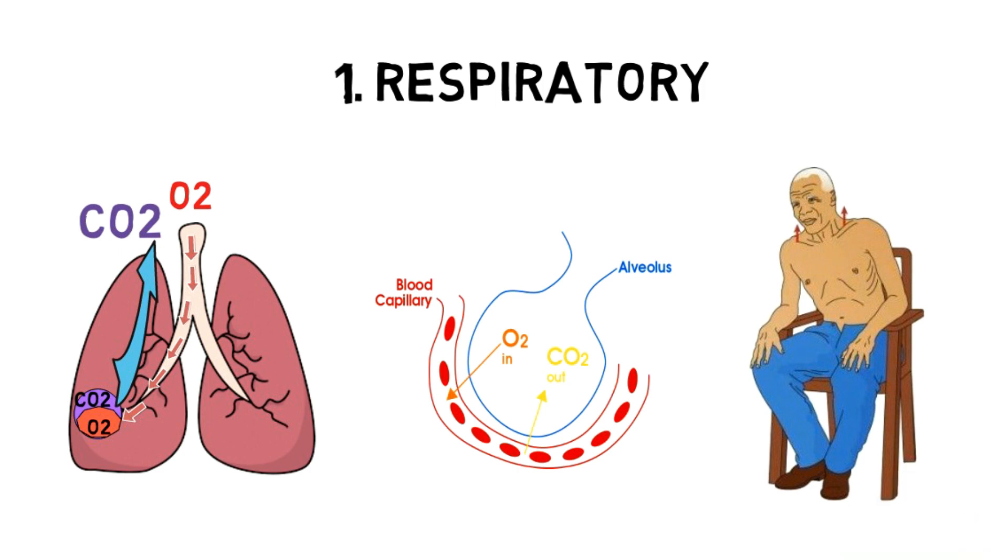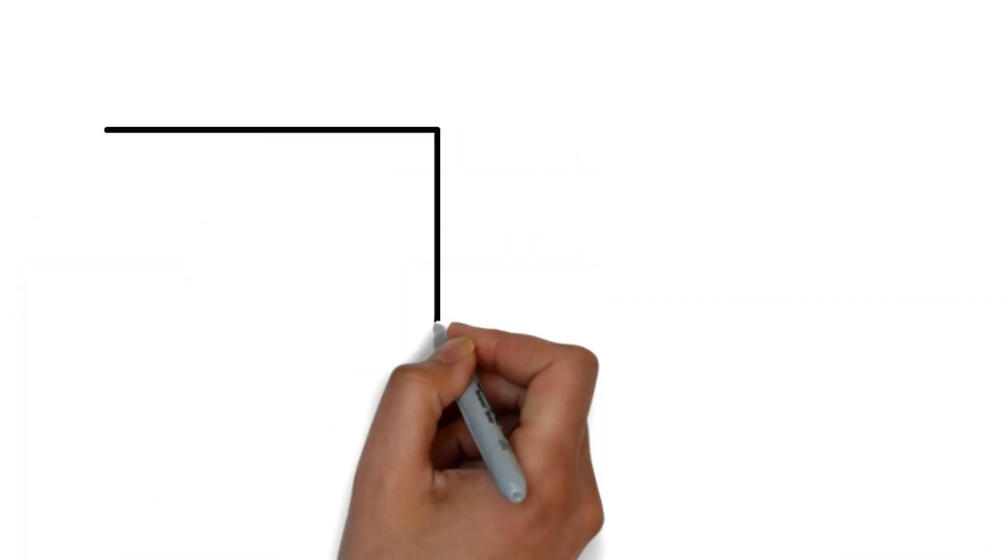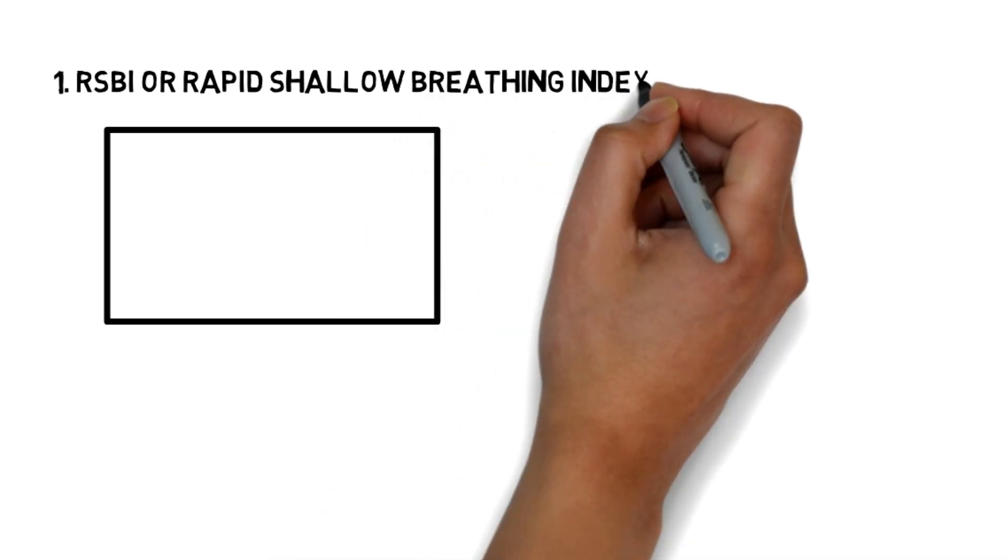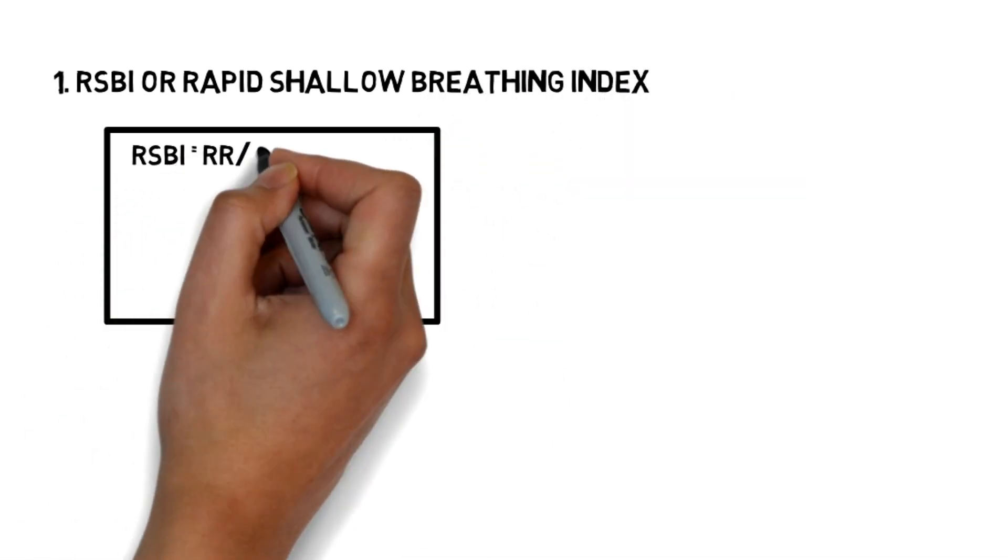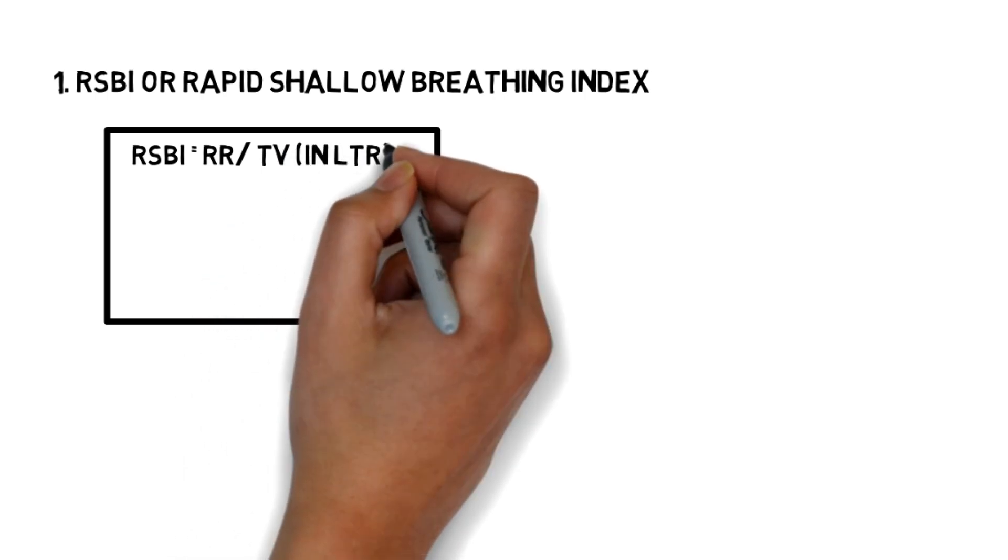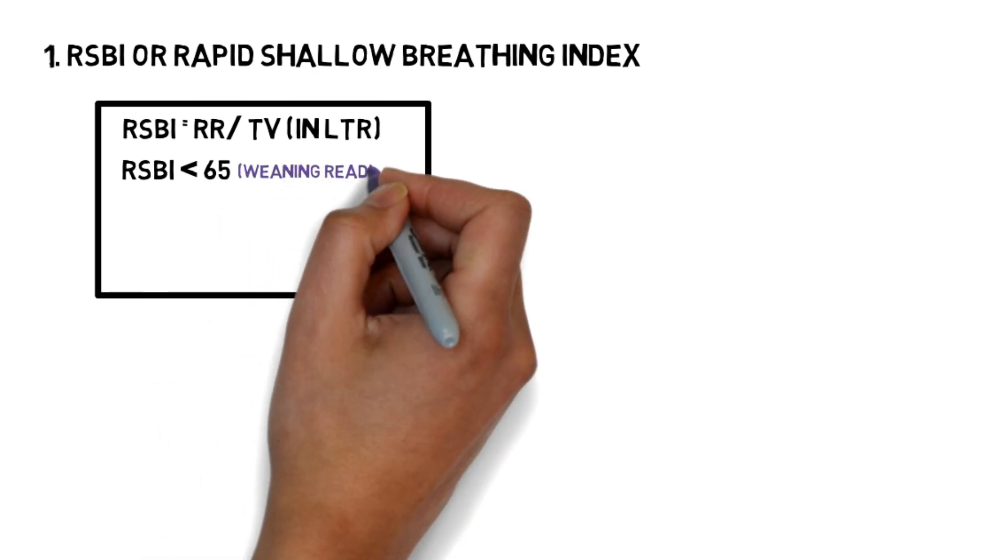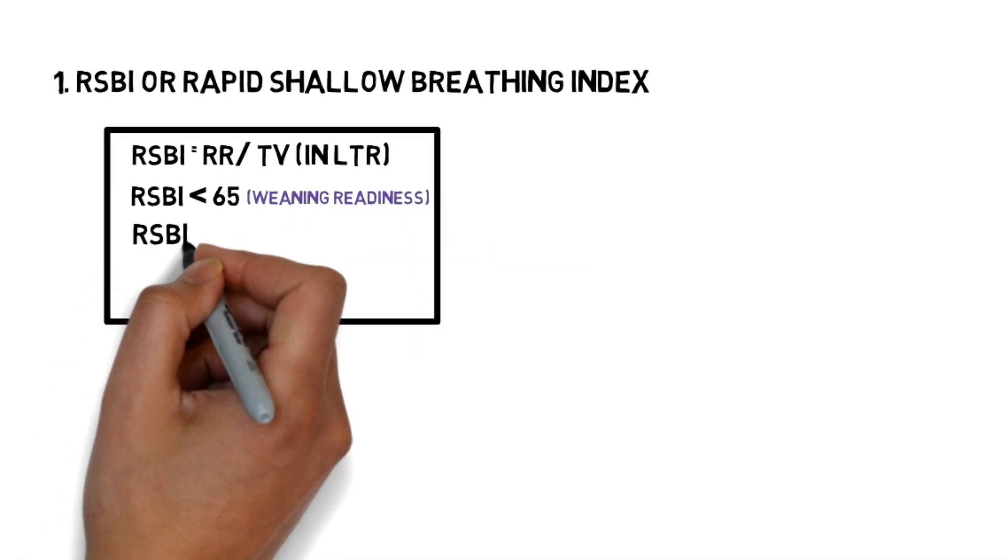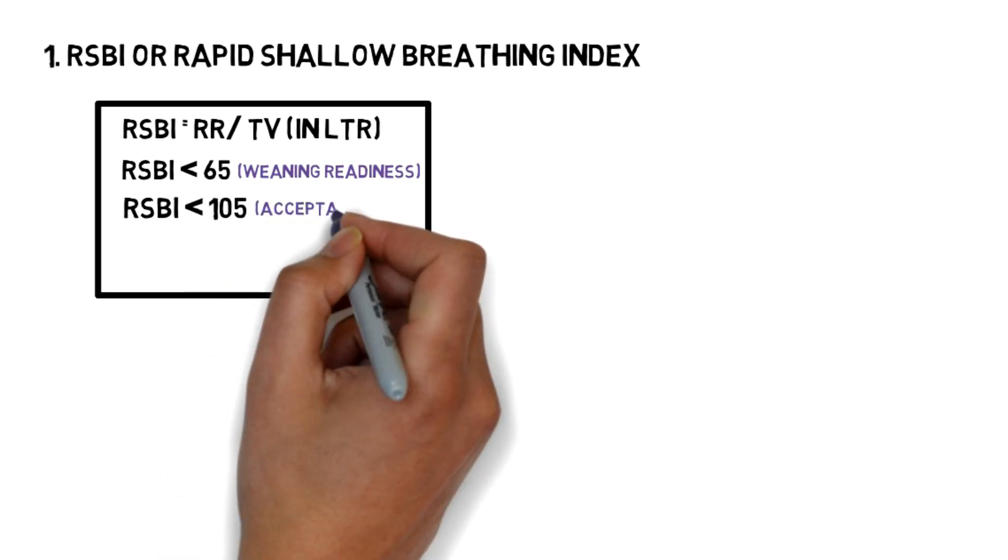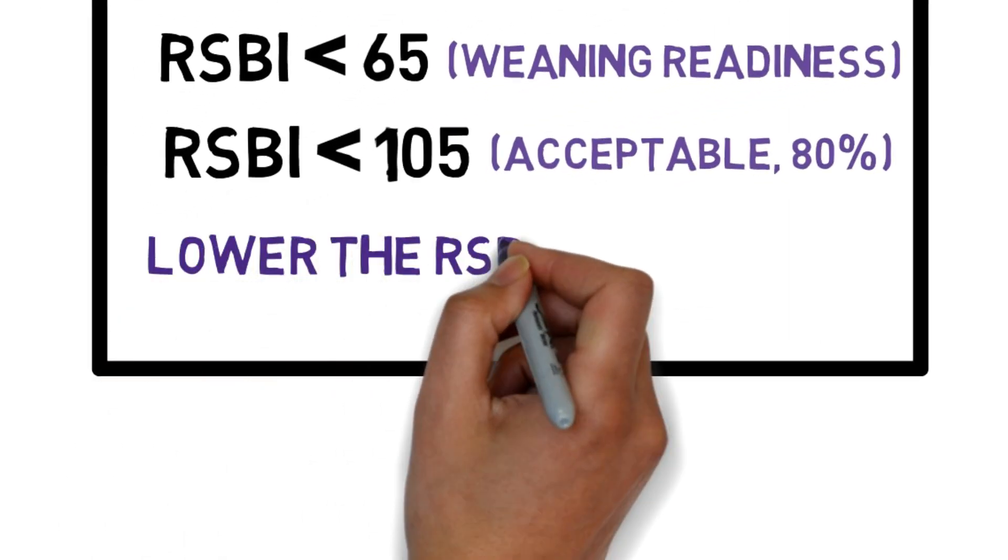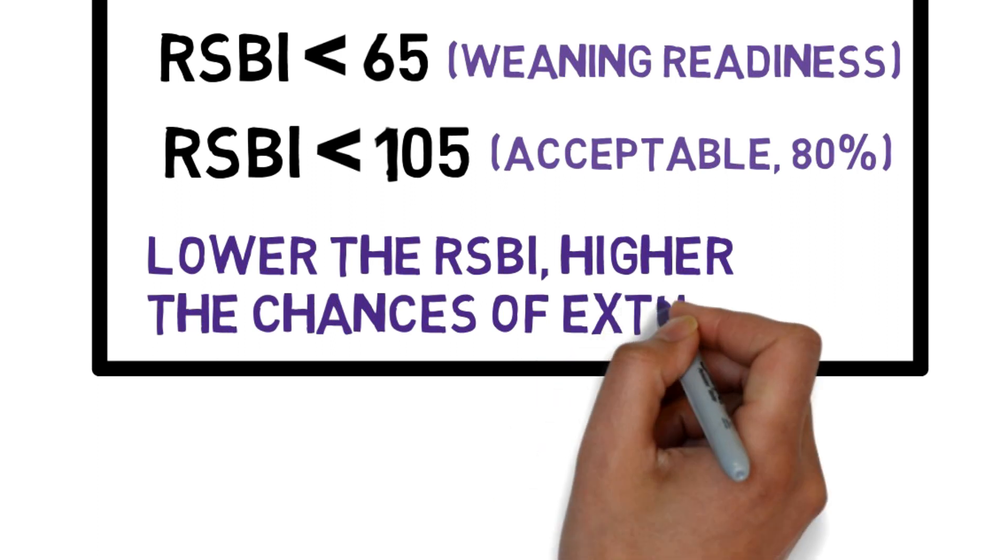Adequate ventilation is assessed by the following criteria. First is RSBI, or rapid shallow breathing index. It is calculated by respiratory rate divided by tidal volume in liters. RSBI less than 65 indicates weaning readiness. However, RSBI less than 105 is acceptable and has approximately 80% chance of successful extubation. The lower the RSBI, the higher the chances of successful extubation.